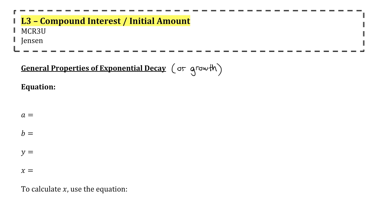If we have an exponential decay or growth relationship, the equation can always be modeled with y equals a times b to the power of x. This is an exponential relationship because x, the independent variable, is in the exponent.